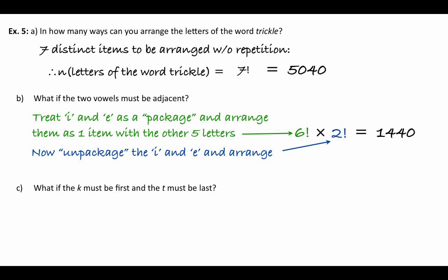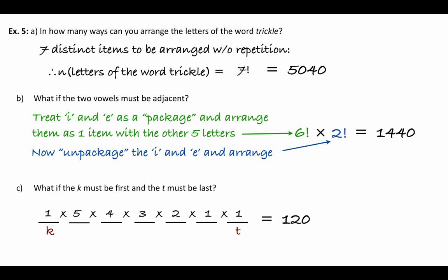Another restriction: K must be first and T must be last. We have our seven spots. K goes first — only one option. T goes last — only one option. We have five remaining letters for five remaining spaces, which is 5 factorial. So 1 times 5! times 1 = 120 ways. Writing it as 5 factorial is quicker than writing 5 times 4 times 3 times 2 times 1.